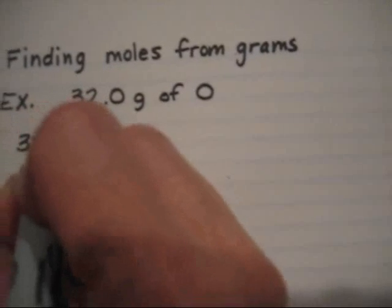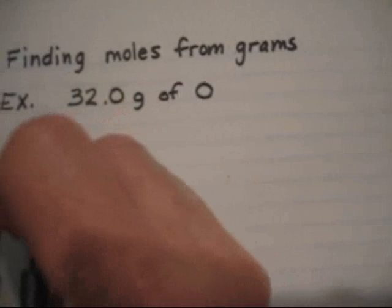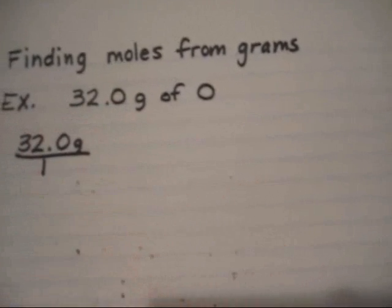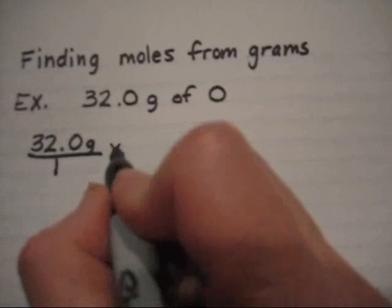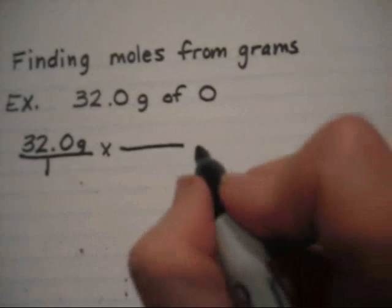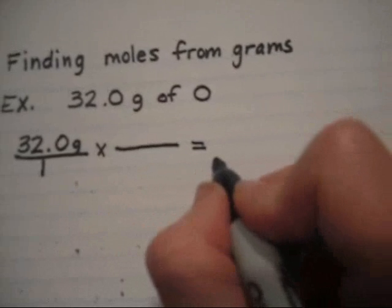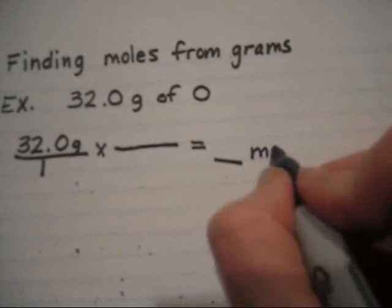We're going to put what we are given on the left. I always put it over one because that makes it even with the rest of the equation. Multiply it by some sort of equality and we're going to end up with something in moles.